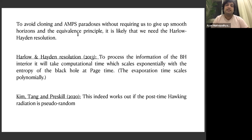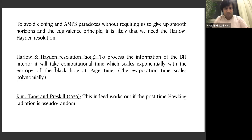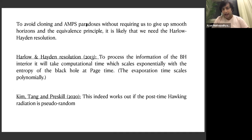The AMPS paradox shows tension between the various assumptions of black hole complementarity: a smooth horizon, the equivalence principle, unitary evolution, and quantum information inequalities involving subadditivity of entanglement entropy. One way to avoid these paradoxes, as Harlow and Hayden argued, is that processing information from the black hole interior in the Hawking radiation takes computational time that scales exponentially with the entropy of the black hole at Page time — while the black hole evaporates in polynomial time.